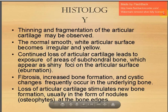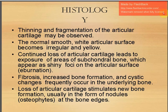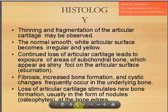Histologically, there is thinning and fragmentation of articular cartilage — the normal smooth white articular surface becomes irregular and yellow. Continued loss of articular cartilage leads to exposure of areas of subchondral bone appearing as shiny foci known as eburnation. Fibrosis is seen, and increased bone formation with cystic changes occur in the underlying bone. Loss of articular cartilage stimulates new bone formation, usually as osteophytes at the bone margins.